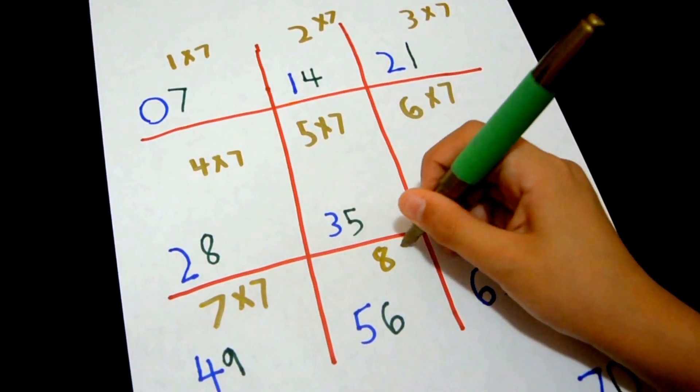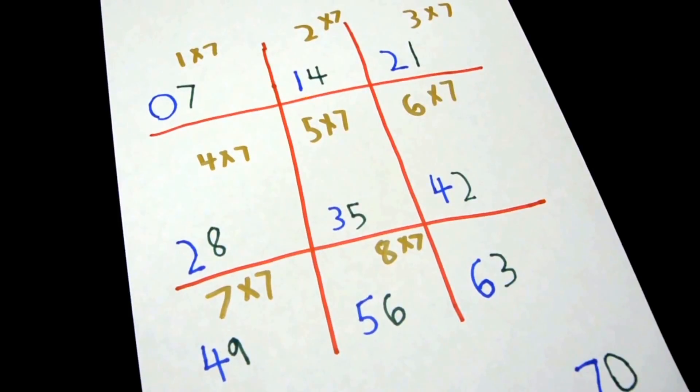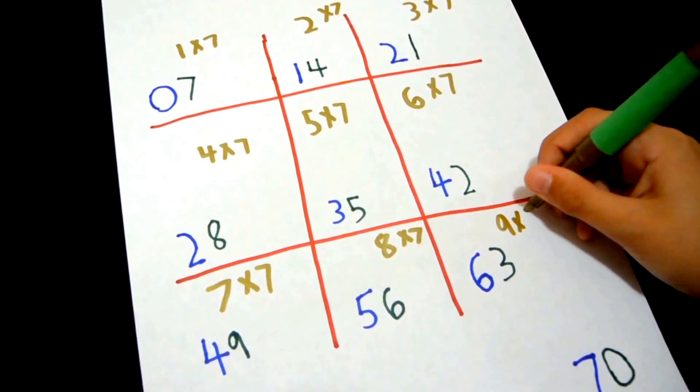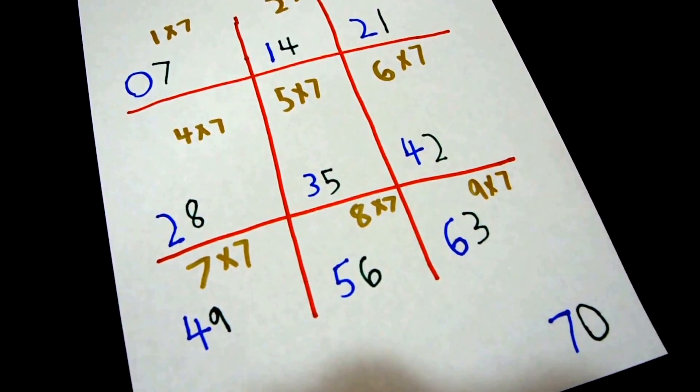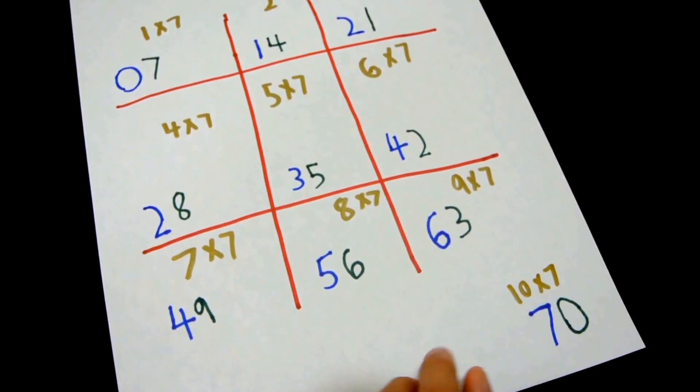8 times 7 is 56. 9 times 7 is 63. 10 times 7 is 53. And 10 times 7 is 70.